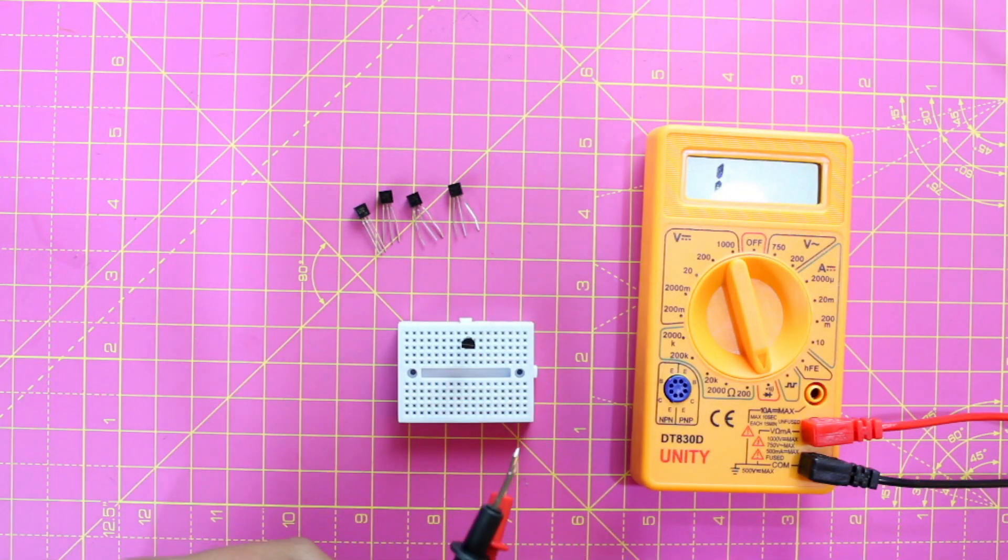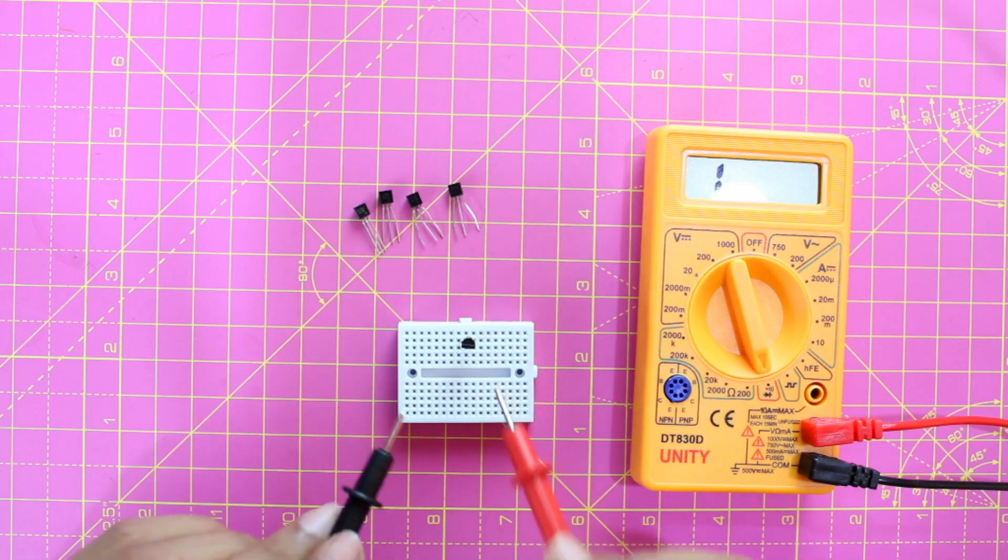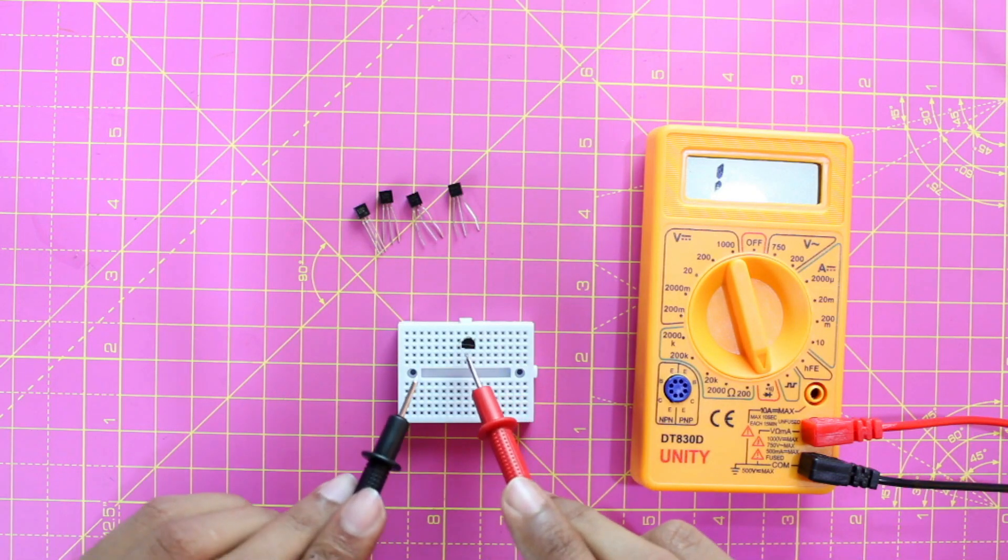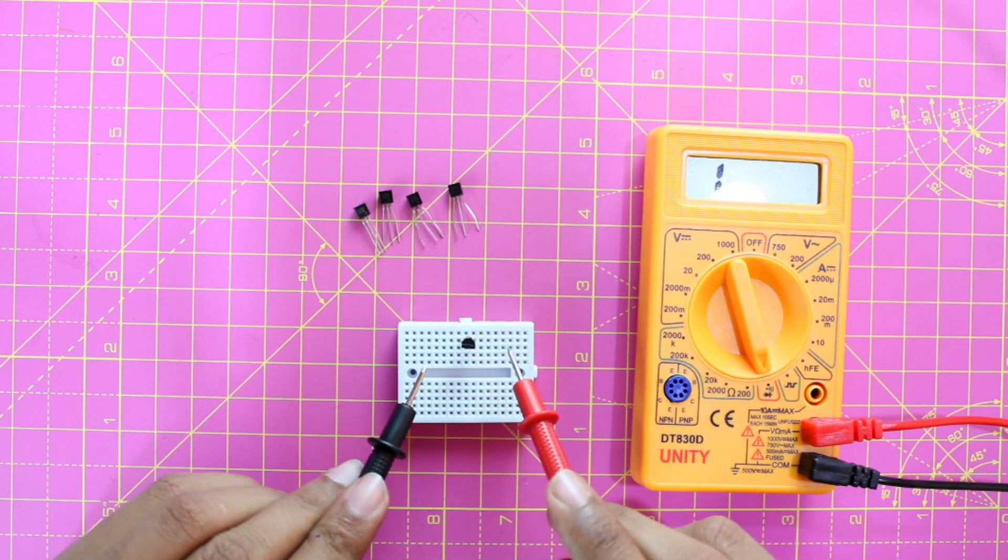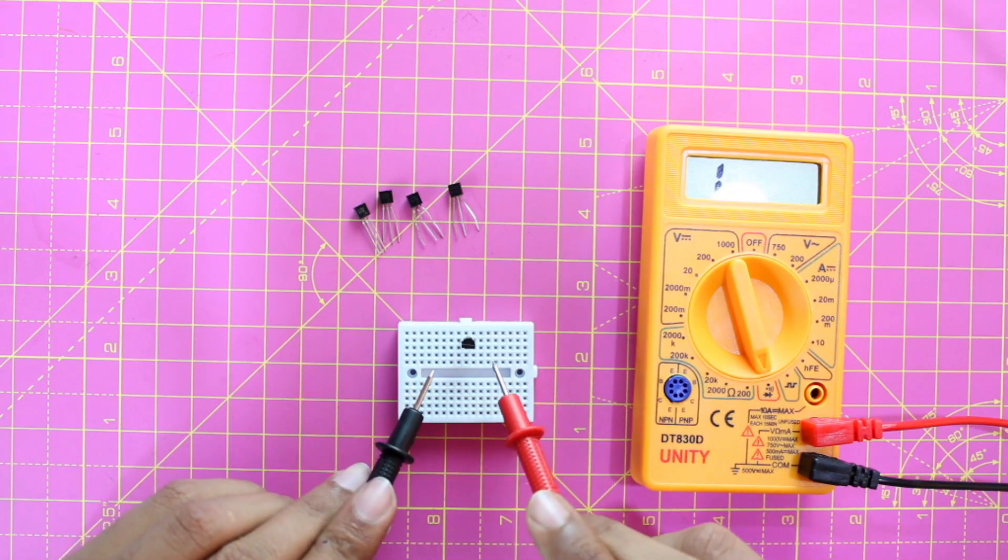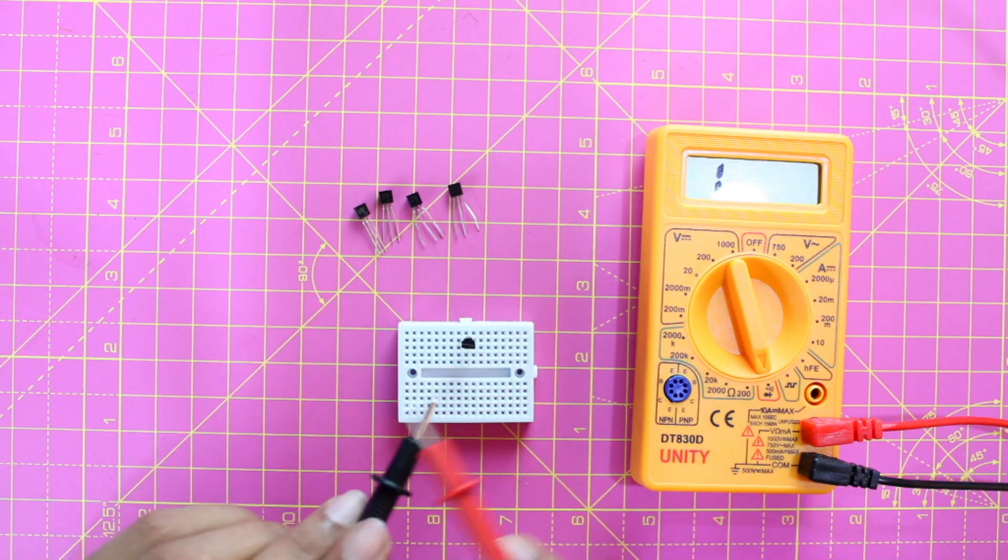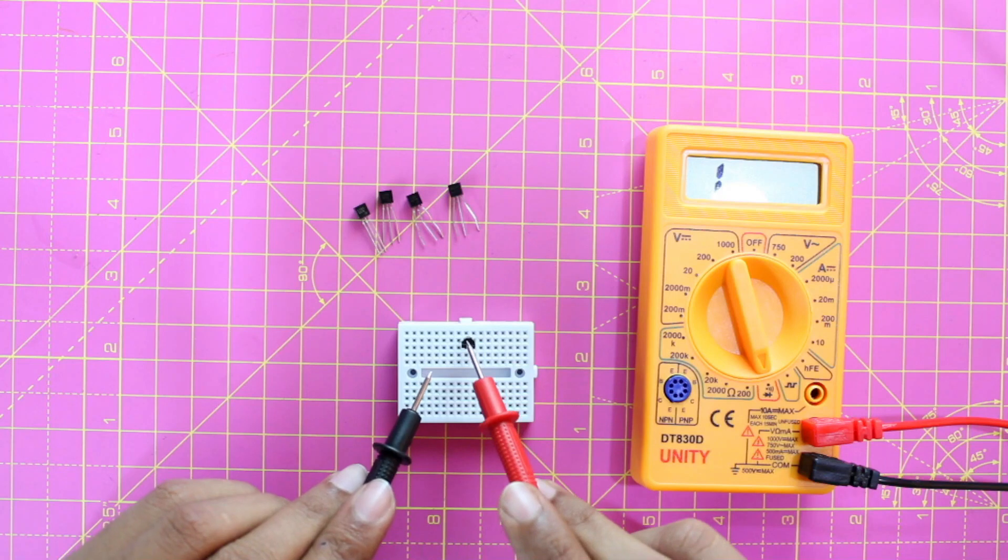Now what we have to do is take our two probes and check for voltage drop between the first two pins and the second two pins of the transistor. If you find a voltage drop, it means your transistor is working. If you don't find any voltage drop, it means your transistor is not working.